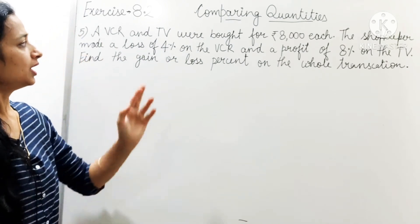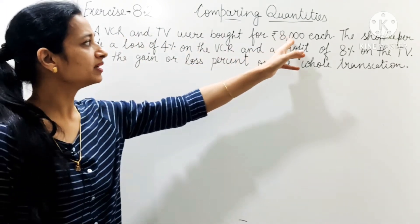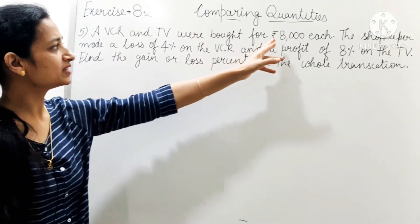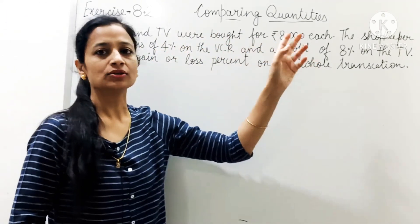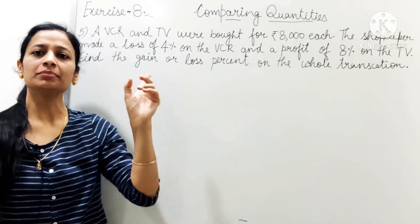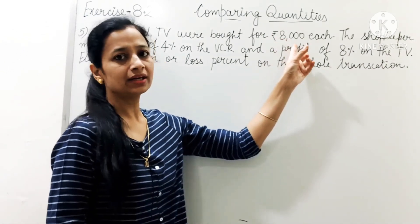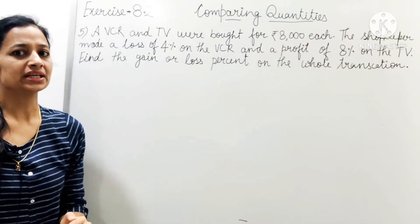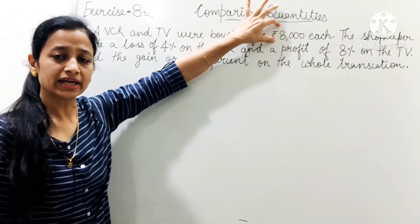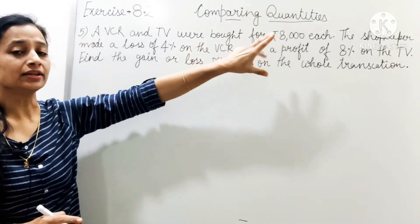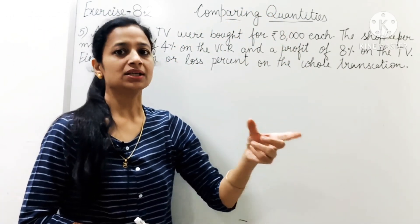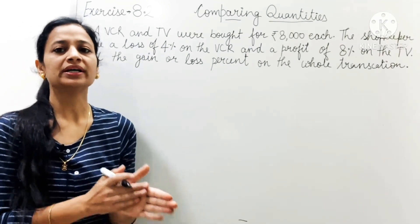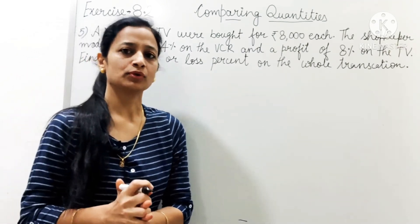Toh dekhi, kaise karenge isko? Hamein CP given hai — VCR ka CP bhi given hai aur TV ka CP bhi given hai. Dono ke profit aur loss percent bhi given hain. Toh VCR ka loss 4% hai, wahan se loss nikalenge aur SP find karenge. Same TV ke liye karenge — 8% profit se profit nikalenge aur selling price nikalenge. Phir total CP (8000+8000) aur total SP compare karenge taaki pata chale ki profit hua ya loss.